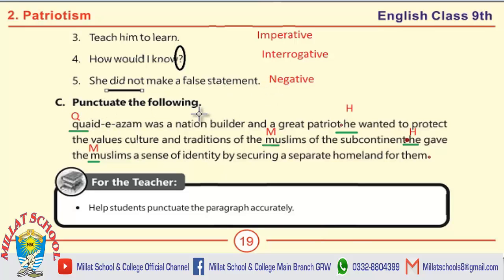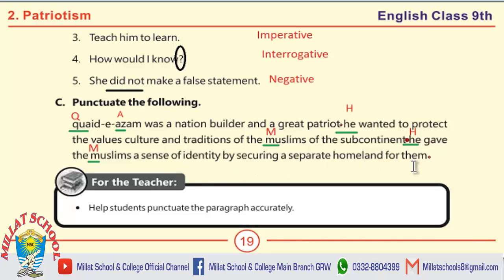Next: Punctuate the following. Remember, a sentence always begins with a capital letter, and proper nouns always start with a capital letter. Quaid-e-Azam was a nation builder and a great patriot. He wanted to protect the values, culture, and traditions of the Muslims of the subcontinent. He gave the Muslims a sense of identity by securing a separate homeland for them. Each sentence ends with a full stop, and the next line starts with a capital letter.